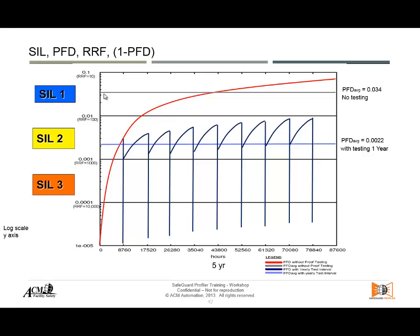Why? Because we're testing the equipment and making sure that it's working. So the probability that it's going to work when required will be much higher, or the probability of failure will be very low. That means I will have a higher SIL 2, better reliability, and my probability of failure on demand will be lower than 0.034, just by proof testing every year — including imperfect proof testing.